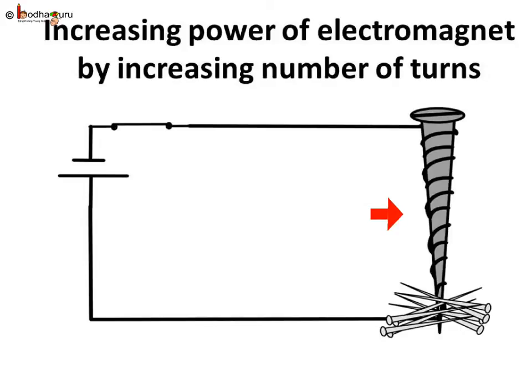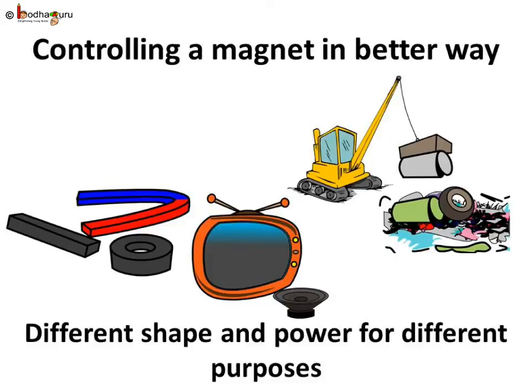You may ask, why was the gaining control over the magnet so necessary? Well, we cannot control the power of the natural magnet. Also, we require magnets of different shapes and sizes too. Hence, the natural magnet cannot be used in many machines.